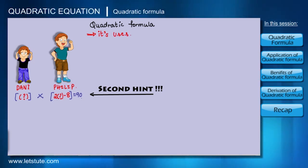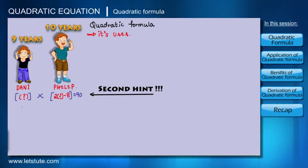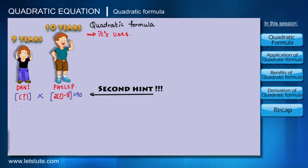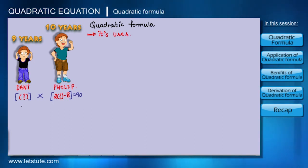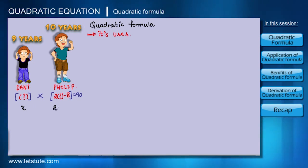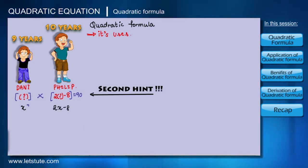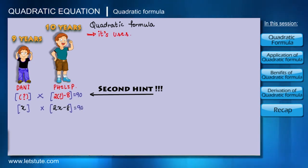The second hint was that the multiplication of their ages is 90. Without taking much time, I could tell them their ages: Danny is nine years and Philip is ten years. They were surprised and asked how I did that. I told them: I took the age of Danny as X years, so Philip's age became 2X minus 8 years.